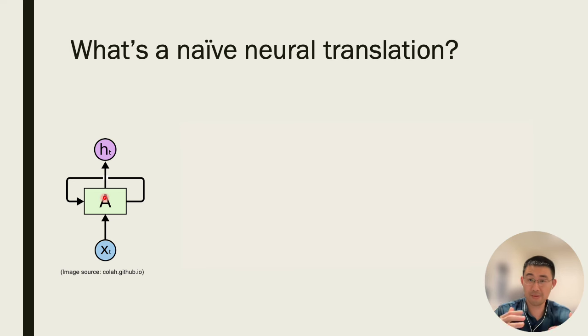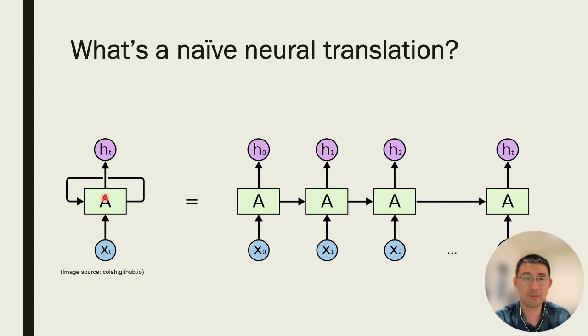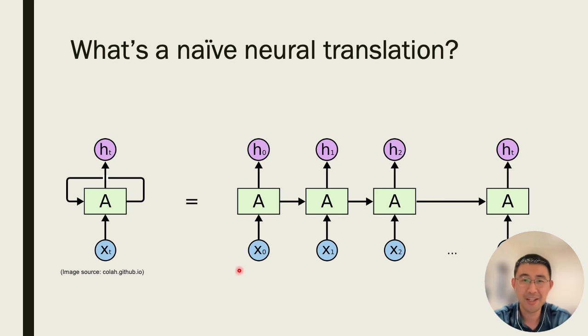Usually a sentence is more than one word, so we do it multiple times. We unroll this. This is a recurrent neural network, RNN.